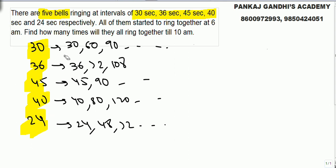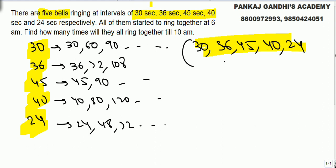All the bells to ring together, so the time should be multiple of 30, 36, 45, 40, and 24. Look, we want common multiple of all these values - the lowest multiple, what we call LCM. One of the most frequently asked questions on LCM. So all the bells will ring together after least common multiple of all these values.